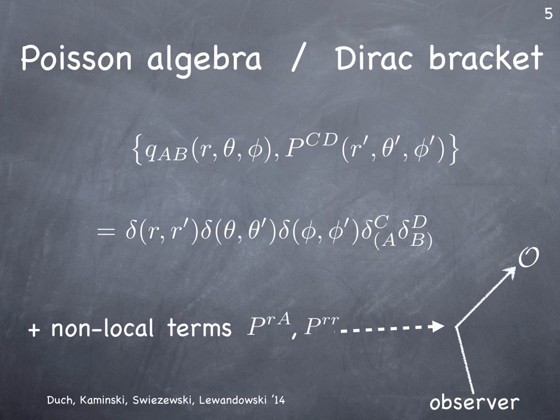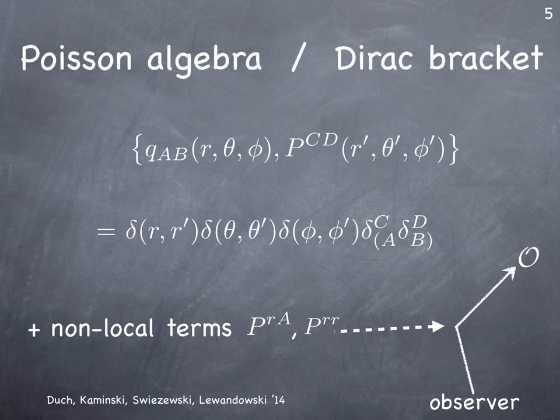There are also non-local terms: the radial and radial-angular components of the momentum P. Their action has been explicitly computed in the paper by Duch, Kaminsky, Schwesinger, and Lewandowski, and they have a nice interpretation as Lie derivatives in the space of geodesic labels. Intuitively, this piece changes the radial-radial and radial-angular components of the metric, thereby changing how the geodesics run in spacetime — tilting them so they end at a different point, and therefore the observable is evaluated at a different point. The Poisson bracket of this piece with your observable acts as a generator of diffeomorphisms in the internal space of geodesic coordinates (r, theta, phi).